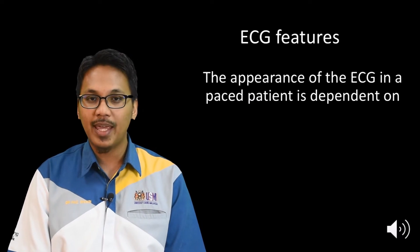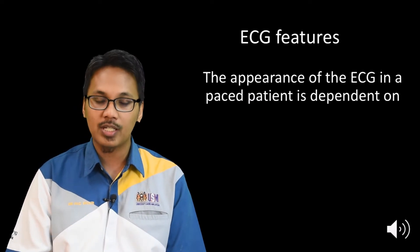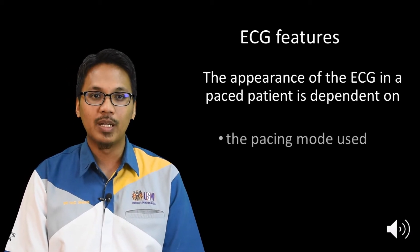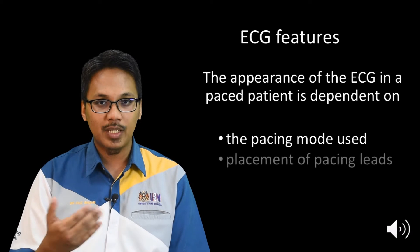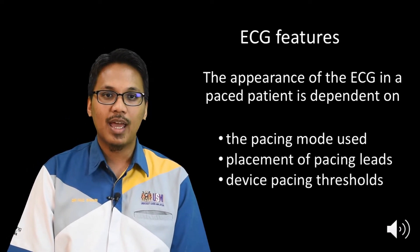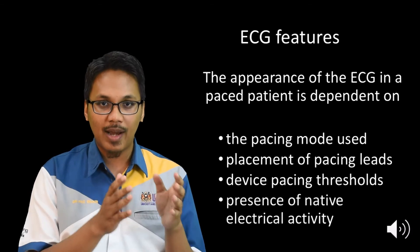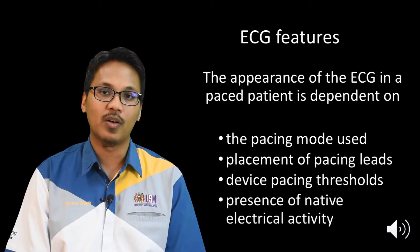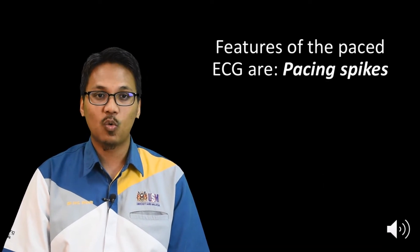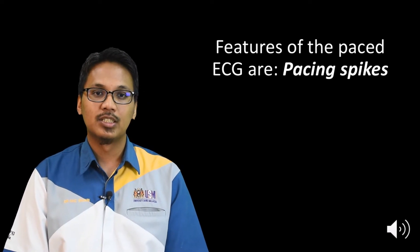So what are the ECG features in a pacing rhythm, or a pacing ECG? The appearance of the ECG in a paced patient — a patient on a pacemaker — is dependent on the pacing mode used, the placement of the pacing leads, the device pacing threshold, as well as whether there is a presence of native electrical activity or not.